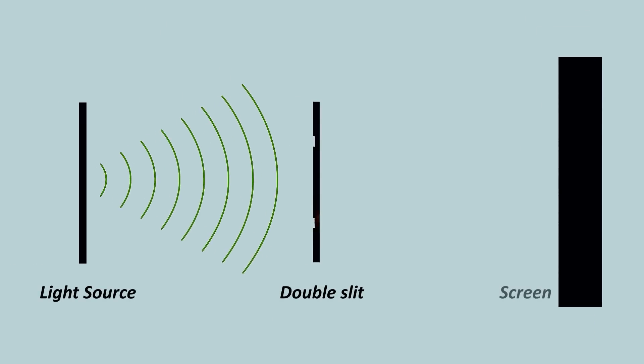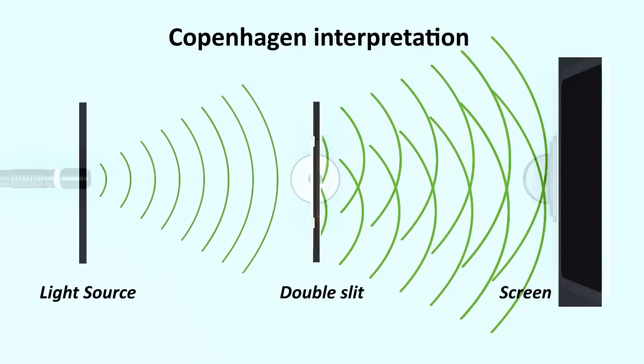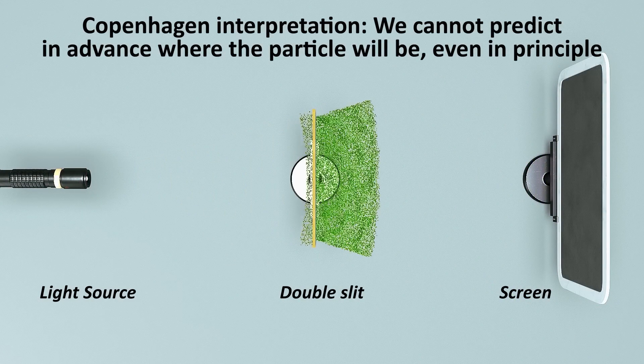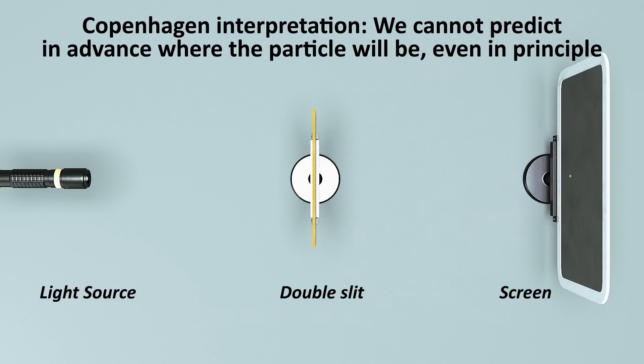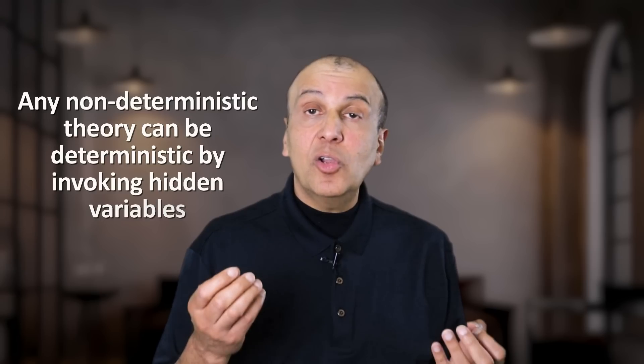This is a departure from the standard Copenhagen interpretation, where there are no hidden variables, and the particle's position is inherently non-deterministic. And when I say non-deterministic, I mean we cannot predict in advance where the particle will be when we measure it. We can only ascertain the probability of where it will be. This goes to show that you can make any non-deterministic theory into a deterministic theory by adding hypothetical hidden variables.